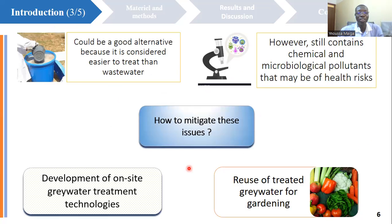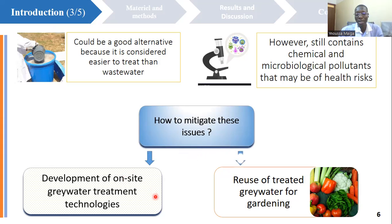Greywater would be a good alternative because it is considered easier to treat than wastewater. However, it still contains microbial and chemical pollutants that may be of health risk. Mitigating these issues can be done through the development of on-site greywater treatment systems and the reuse of the water for gardening.